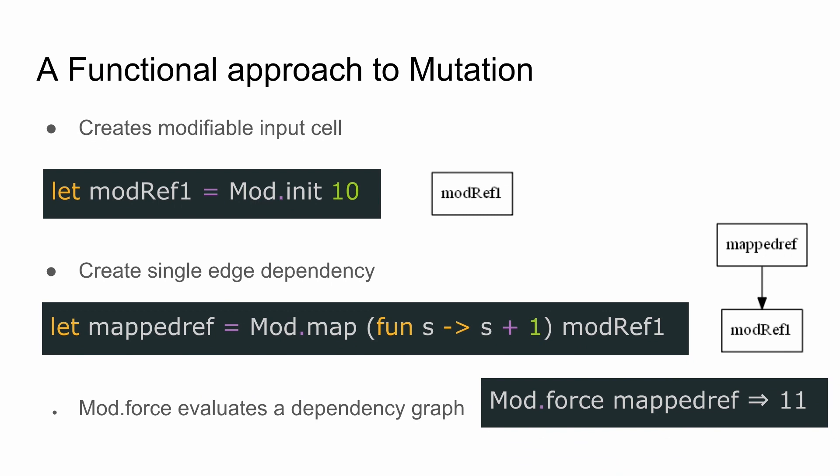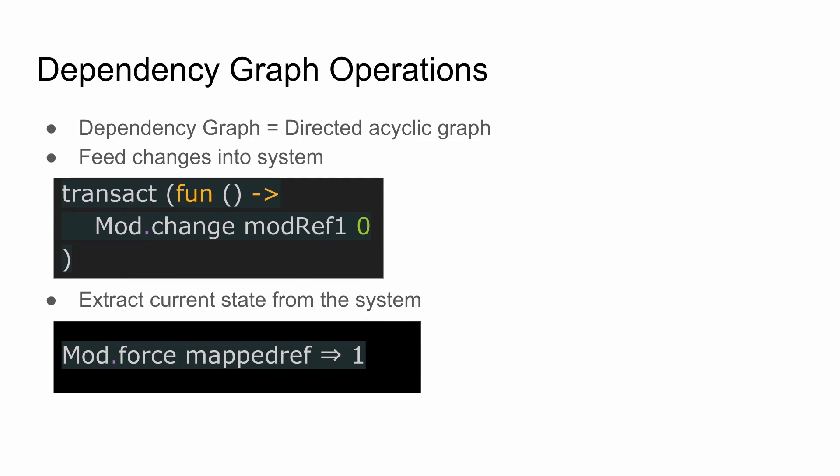There's one function to extract the current value of those values, a mechanism to put in changes, and a mechanism to extract the current data. This is exactly what we want: the user modifies something, and we want the 3D state and then the GPU state to be updated accordingly. So we want this implicit dependency tracking mechanism to implement the engine.